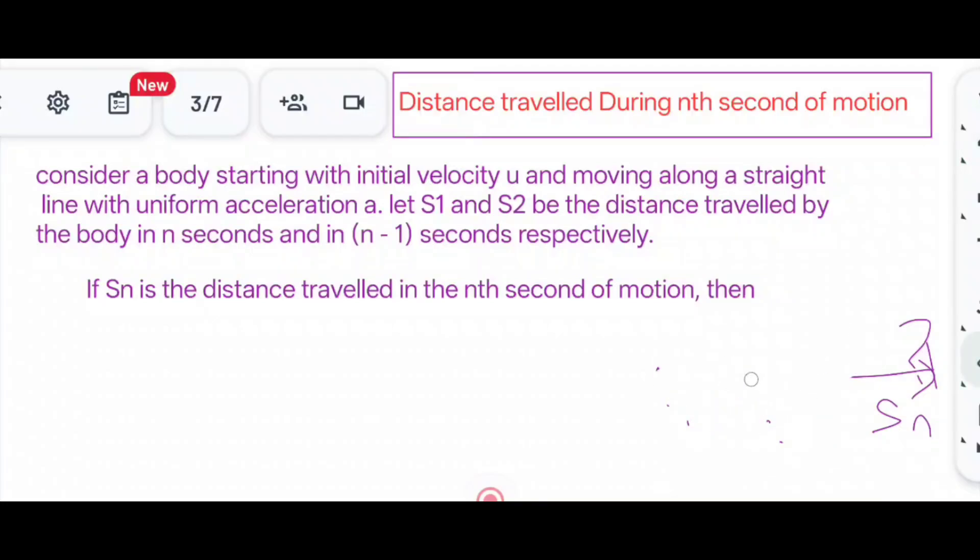Consider a body starting with initial velocity U and moving along a straight line with uniform acceleration A. Let S1 and S2 be the distance traveled by the body in n seconds and in n-1 seconds respectively. If Sn is the distance traveled in the nth second of motion, then Sn equals S1 minus S2.